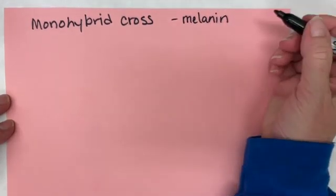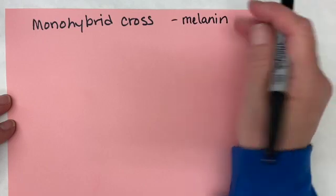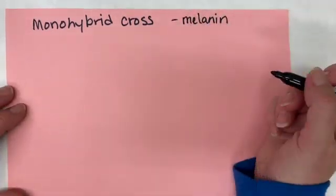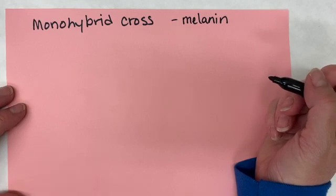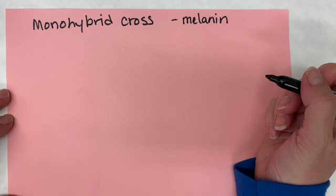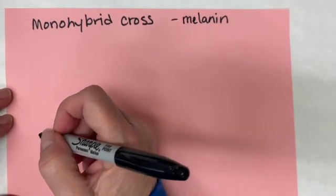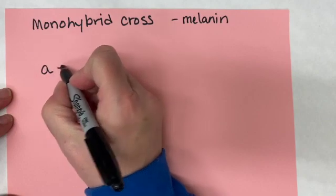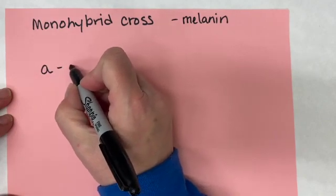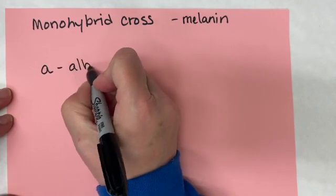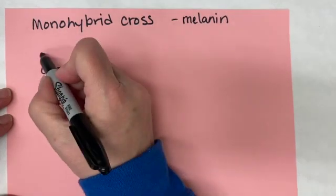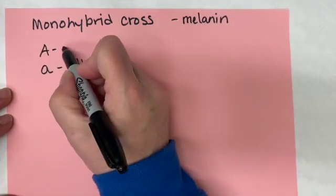Melanin is the ability to have color in your skin. There's a little bit of melanin in my skin; some people have more, some have less, but some people make no melanin — those people are known as albino. Albino is a recessive trait, so we use a lowercase letter to represent it. That means the ability to make melanin is a dominant trait.